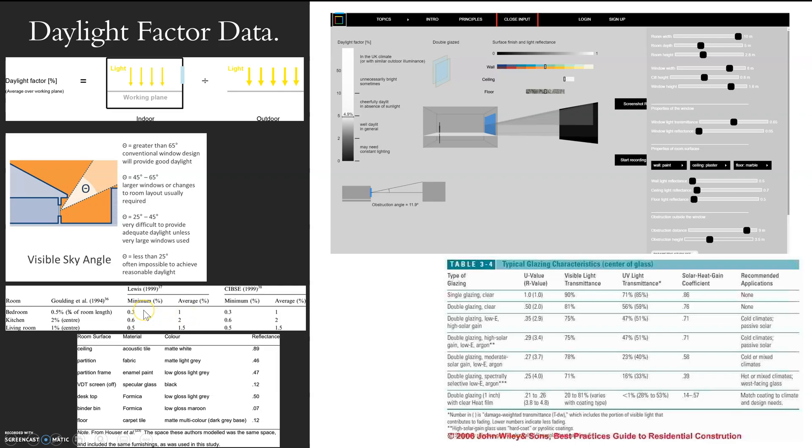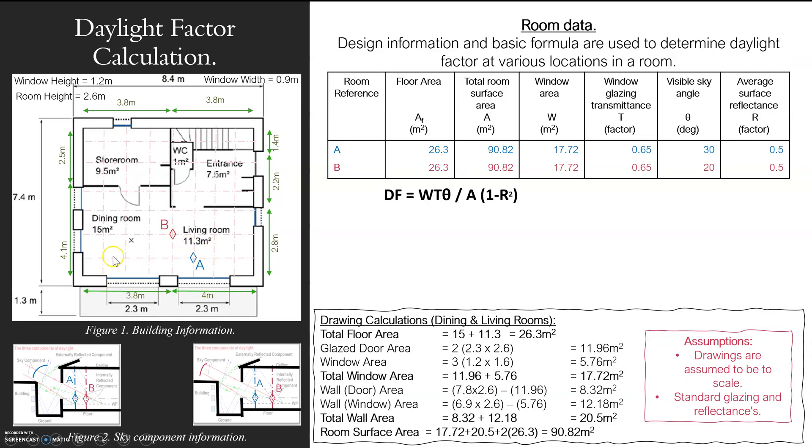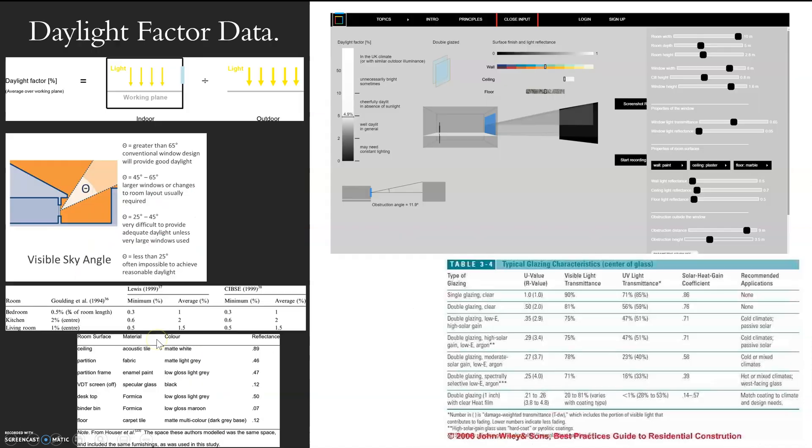You can plot points wherever you want in the room - maybe go to your darkest and lightest points to see the difference, or you could do a grid like I've drawn out here and measure at each point. That will give you a clear indication of how much daylight factor is in each space. The 1994 goals say 2% in the center of a kitchen and 1% in the center of a living room is what we should be looking for.